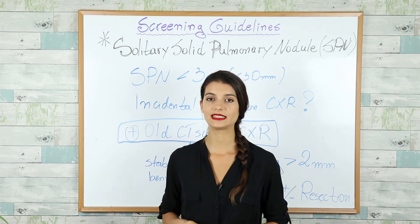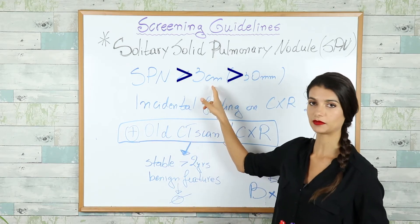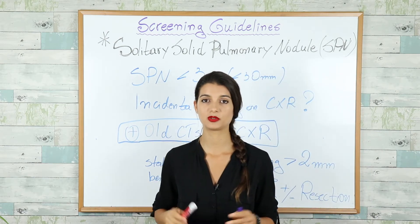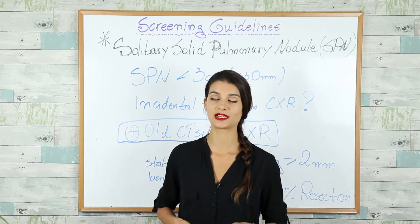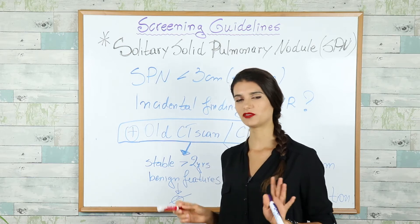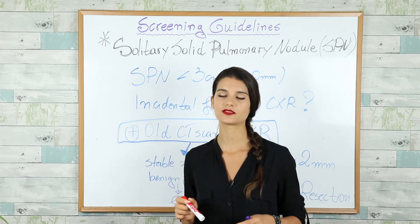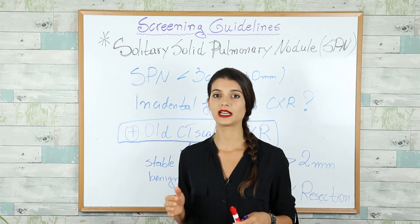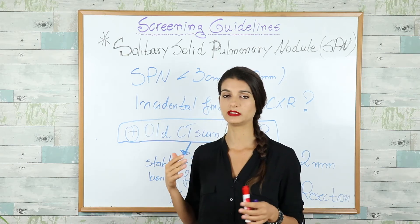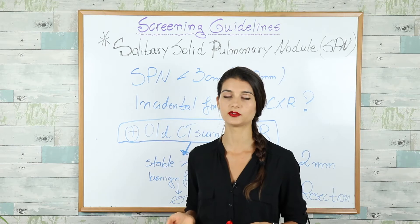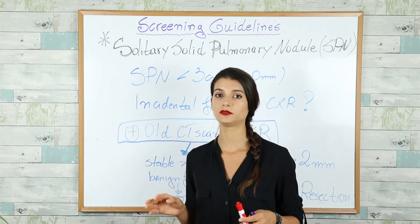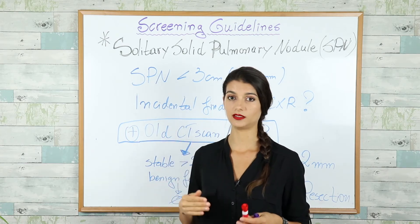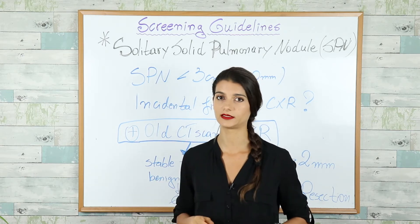A solitary pulmonary nodule is defined as a lesion more than 3 centimeters (or 30 millimeters) in diameter. If you find one incidentally on chest x-ray, what is the best next step? You ask for an old chest x-ray. Note that in real clinical practice we would request or perform an immediate CT scan to assess nodule characteristics, but on the USMLE exam — because it doesn't update as quickly — if you see 'ask for old chest x-ray' as an answer choice, pick that.